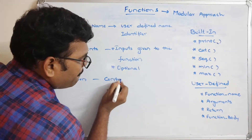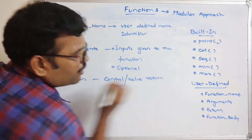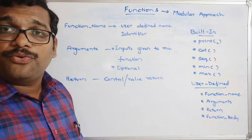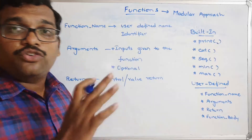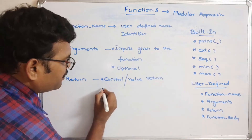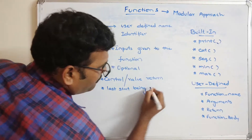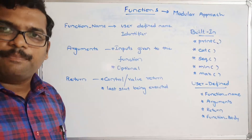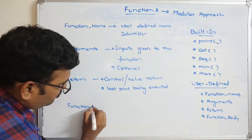The third component is return. This refers to a control or value being returned. Once the user-defined function is fully executed, the result — either a value or just a control — is sent back to the function call. The return statement is the last statement executed inside the function.